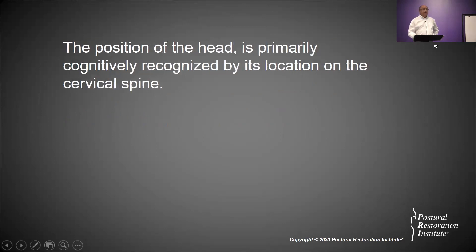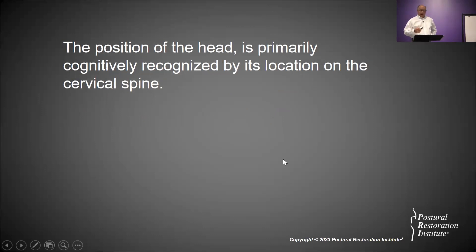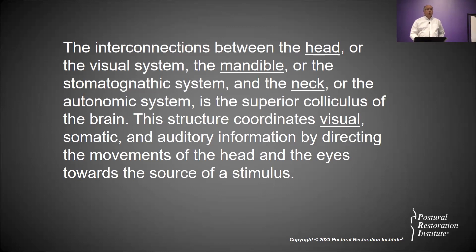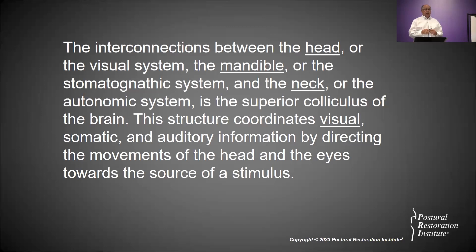The position of the head is primarily cognitively recognized by its location on our cervical spine — really referring to the entire spine, but we rest on the atlas. The interconnections between the head or visual system, the mandible or stomatognathic system, and the neck or autonomic system is the superior colliculus of the brain — the colliculus area with inferior and superior aspects. When you say head, mandible, and neck, the interface of that circuitry begins, ends, and is ongoing in that midbrain region. This structure coordinates visual, somatic, and auditory information by directing movement of the head and eyes toward the source of a stimulus.